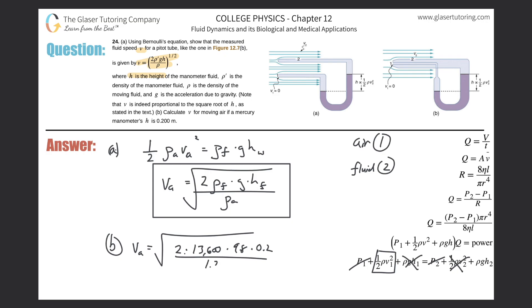And when we plug this into the calculator, we'll get our answer. So square root of two times 13,600 times 9.8 times 0.2 divided by 1.29. And here it is. 203 meters per second. That is the velocity of air necessary to raise mercury by almost a quarter of a meter.